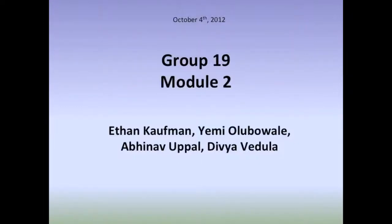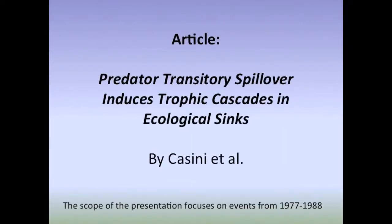The 4th of October, 2012. We are Group 19, Module 2. Casini's article, 'Predator Transitory Spillover Induces Trophic Cascades and Ecological Sinks,' details shifts in cod and herring populations over the course of three and a half decades. However, a primary focus has been applied to events from 1977 to 1988 in this presentation. This 11-year scope details a shift in cod and herring populations in the Baltic Main Basin and its neighbor, the Gulf of Riga.